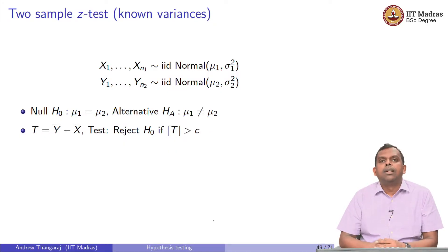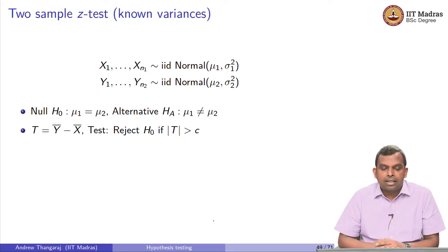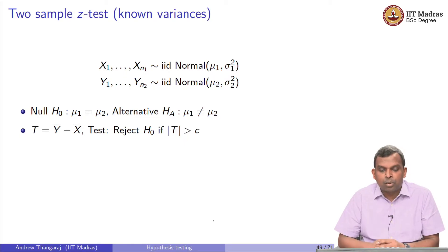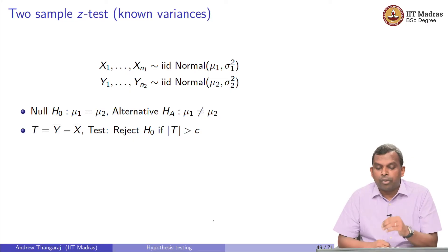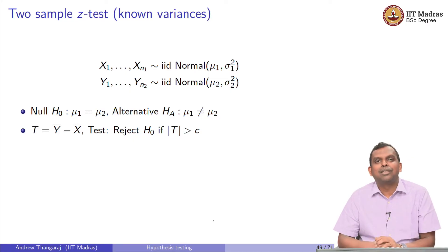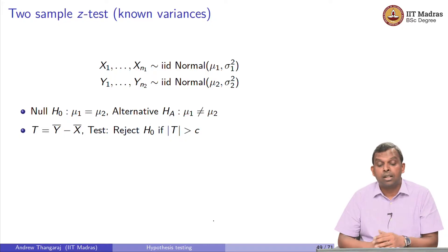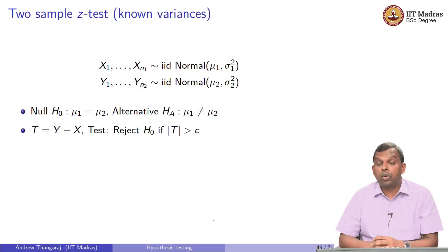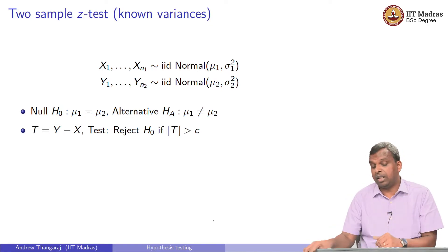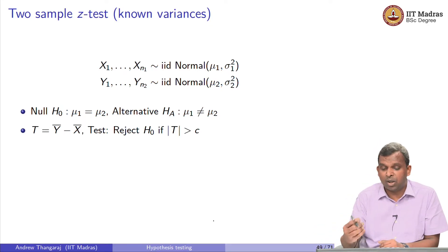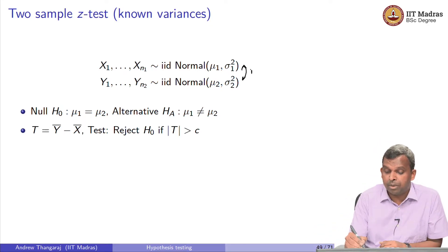Hello and welcome. We are going to first start with the two-sample Z test. The variances are known. We have two samples — the first is normal with mean mu 1 and variance sigma 1 squared, the second is normal with mean mu 2 and sigma 2 squared. These two samples are independent. When you say two samples, we will always assume they are independent.